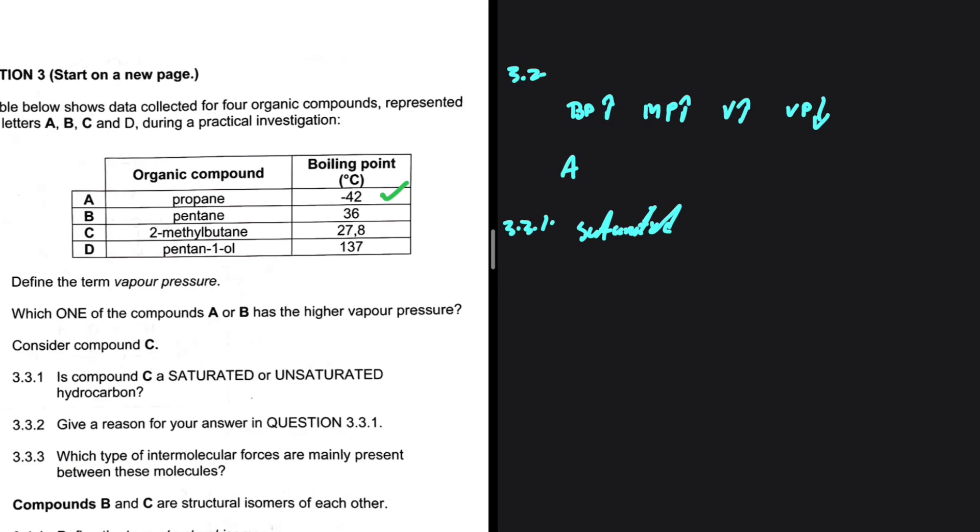Just like our compound C, it is a simple alkane saturated compound. Alkenes and alkynes are unsaturated because we have double and triple bonds. Here we only have single bonds.